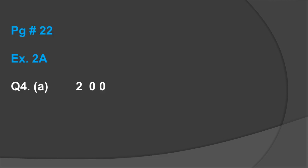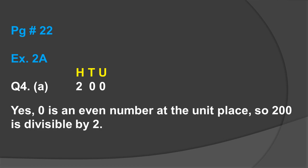Which of the following numbers are divisible by 2? According to rule number 1, I will solve parts A and C for you and you will solve the rest yourselves. Part A is 200. Give the place value on top: units, tens, hundreds. We have to focus the unit place — we have zero there. Zero is an even number, so the answer is yes: 200 is divisible by 2.